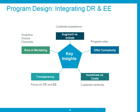The five key insights are: first, augment versus initiate; second, role of offer complexity and program rules; third, incentives versus costs and the tradeoffs therein; fourth, need for transparency; and finally, the role of the marketing mix. Not to say there couldn't be other factors relevant in a certain utility footprint, but we have identified these five key insights that come into play the most.